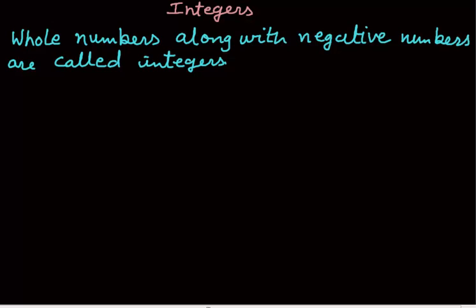So integers are 0. On the right side we have positive numbers and on the left side we have negative numbers, that is negative 1, negative 2, negative 3, and so on.